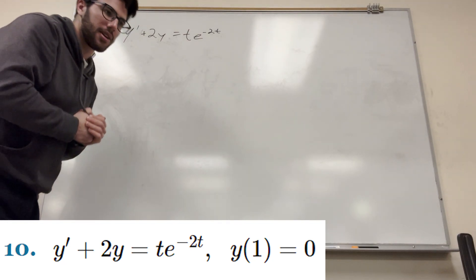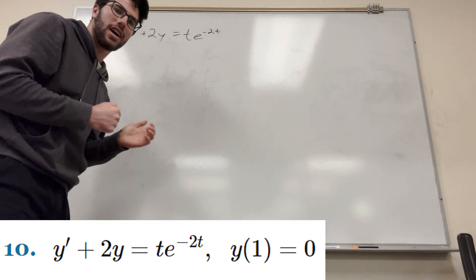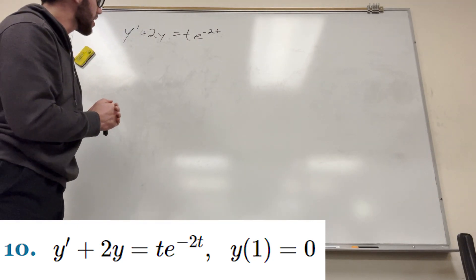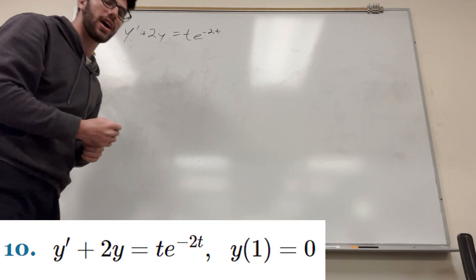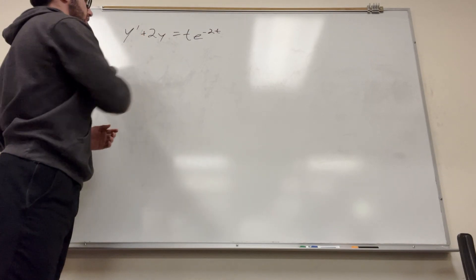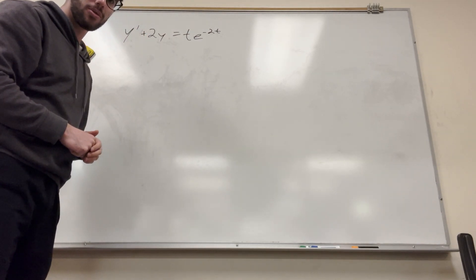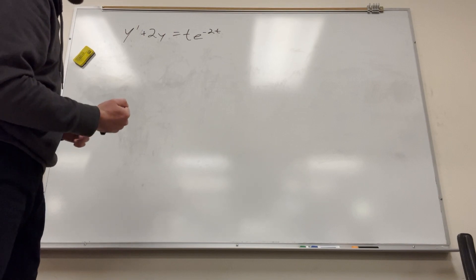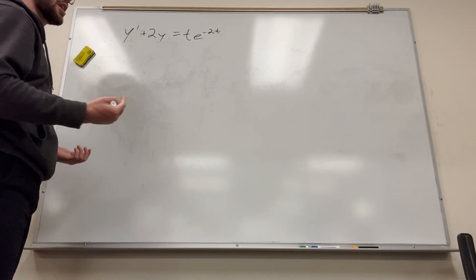y prime plus 2y is equal to te to the negative 2t. So what can we do here? Well, can we do separation of variables? No, we can't. What we have here is a linear function, because you're not just dividing by y on the y side. You have a plus here, basically. So when we have this, we're going to need to do a little bit of manipulation to get this question into a form that we want.